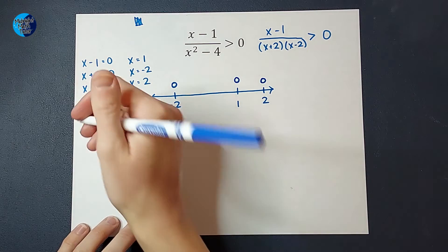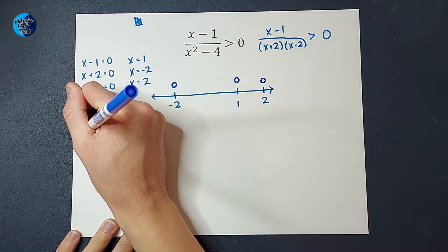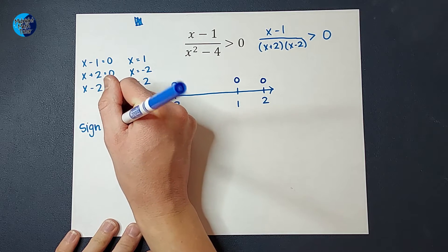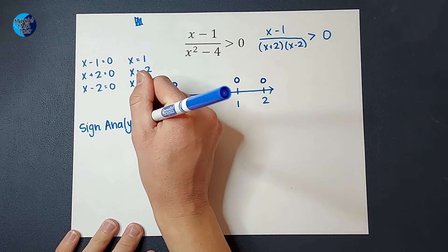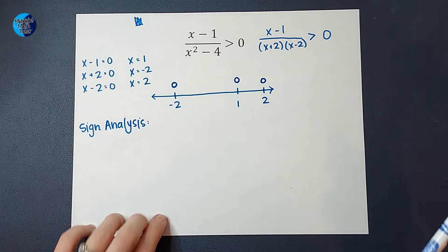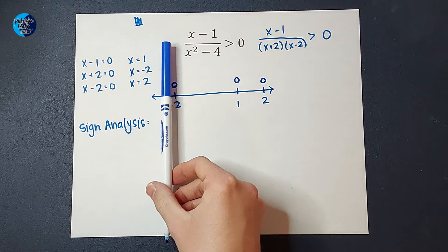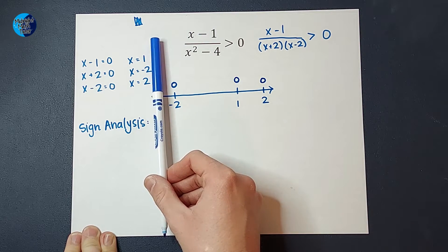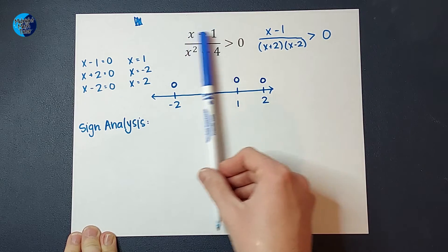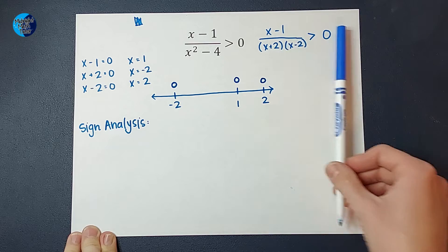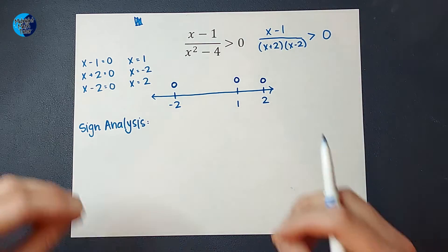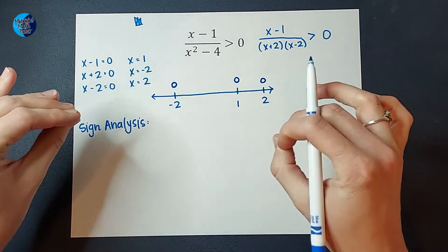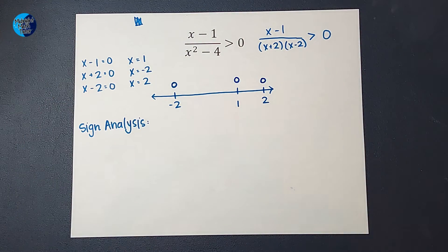From here, we are going to do something we affectionately call sign analysis. It sounds fancy, but it's really not that fancy. What we're going to do is for each of these regions — left of negative two, between negative two and one, between one and two, and to the right of two — we want to figure out when I plug in a number for x in those sections, will my output be positive or negative?